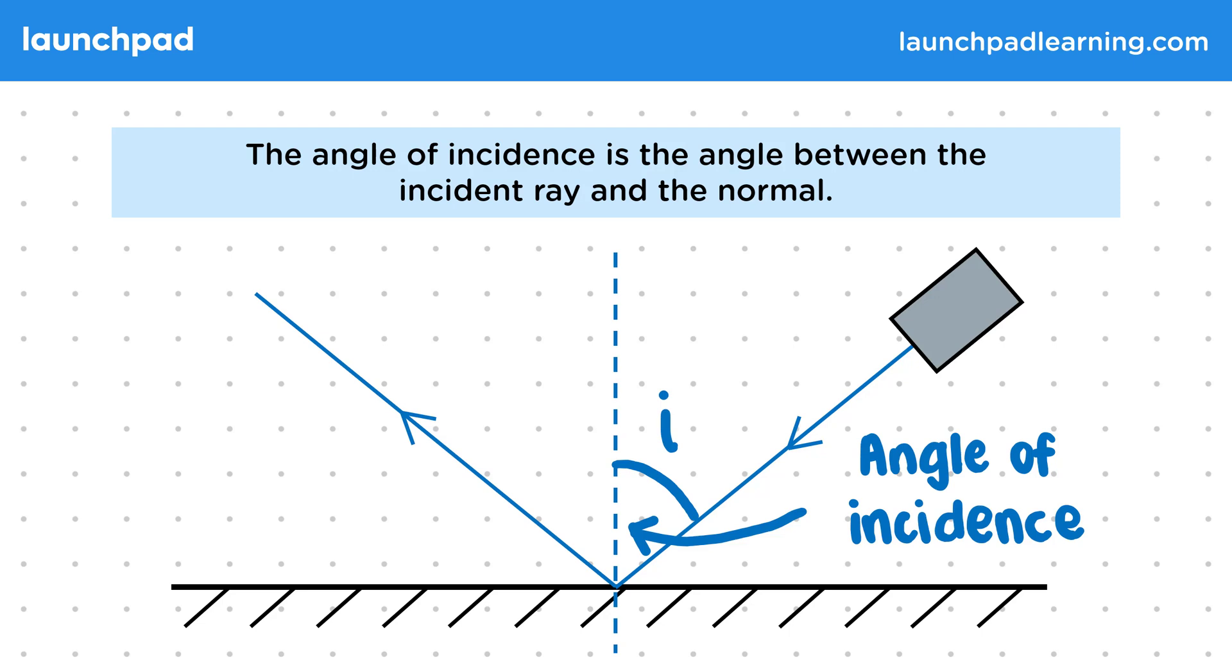We measure against the normal instead of the surface as measuring angles against a curved or uneven surface would be pretty difficult. Now we can do the same for the reflected ray.